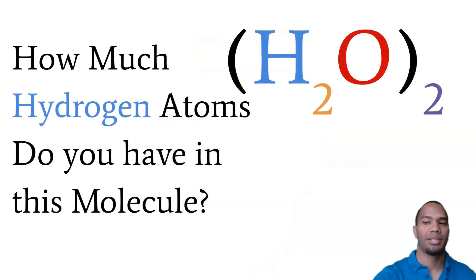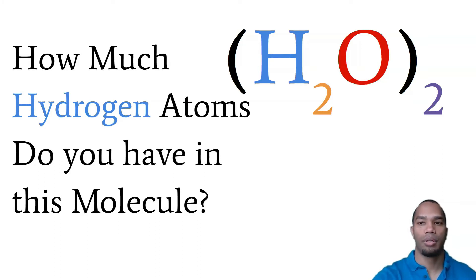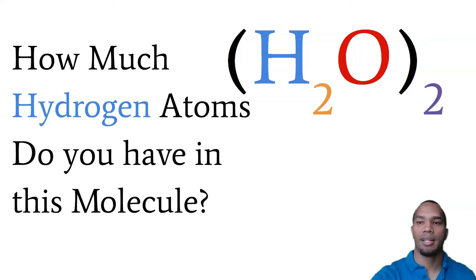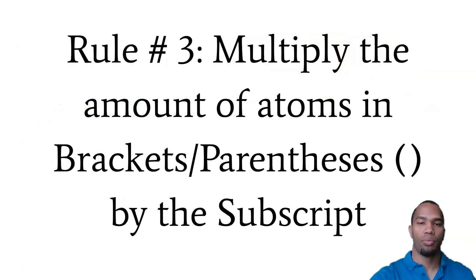How many hydrogen atoms do you have in this molecule? You notice there's something different about this, right? We have these brackets or parentheses and there's a subscript on the outside. So how do we deal with this? Rule number three: you multiply the amount of atoms in the brackets or parentheses by the subscript.